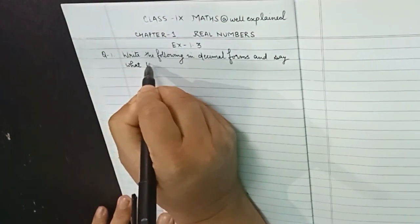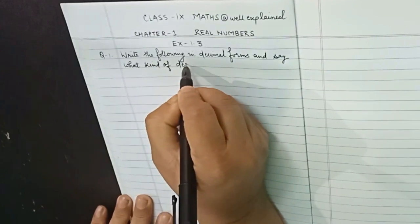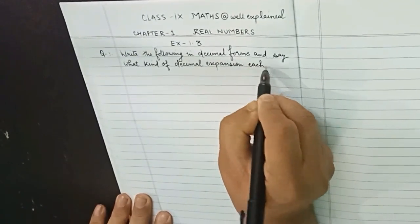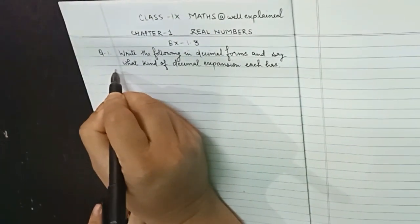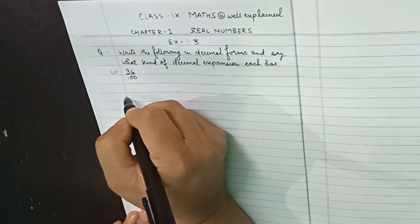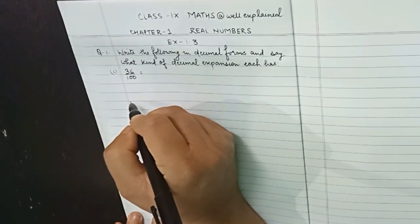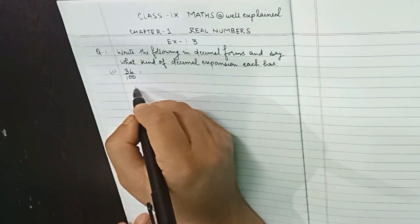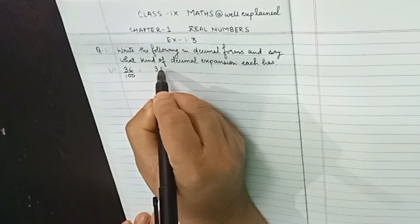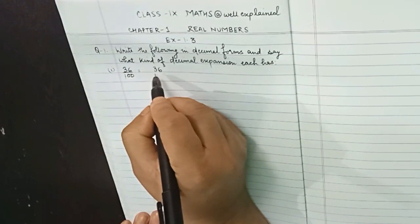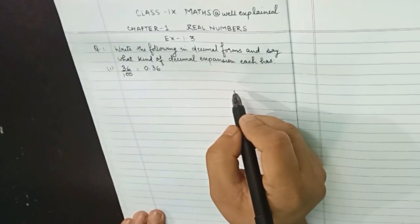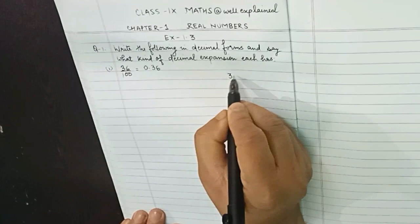The first one is 36 upon 100. As you can see in this rational number, the denominator is 100. You have learnt in previous classes that whenever the denominator has zeros, you can directly convert it into decimals by counting the number of zeros. There are two zeros, so moving the decimal two places left gives 0.36.